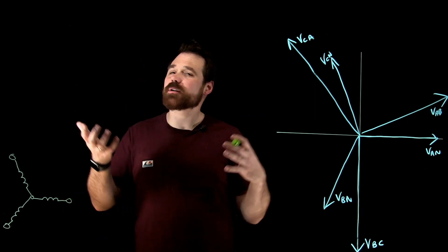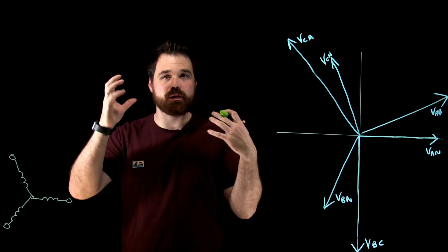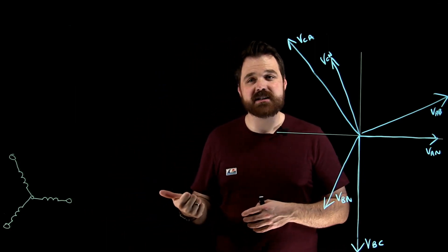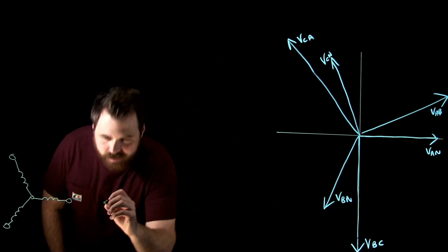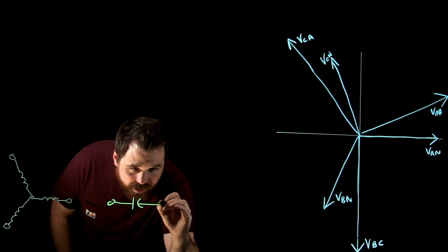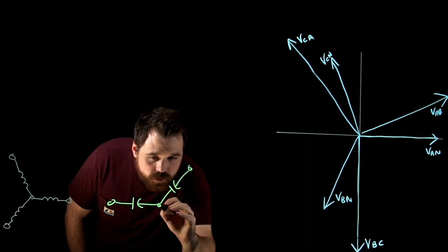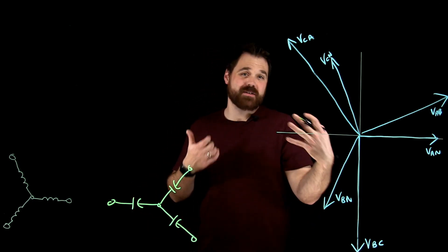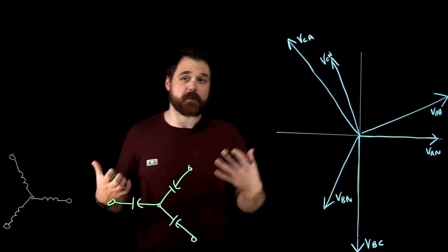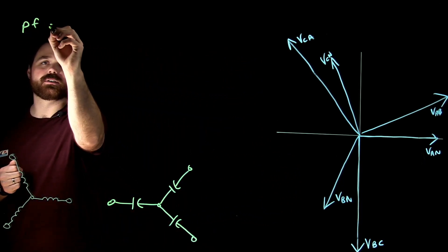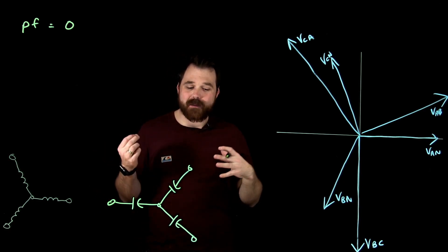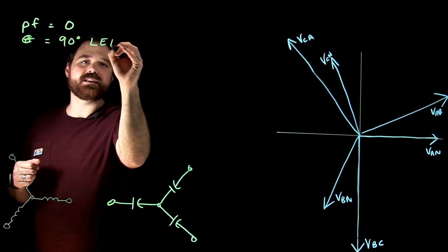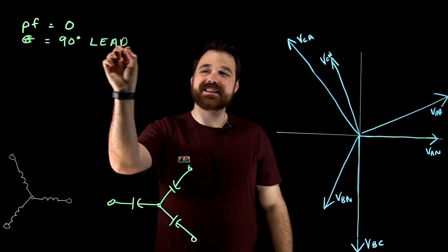Welcome back. I'm talking about a balanced three phase Y load. To have a balanced load, we need the same impedance in each phase and the same power factor in each phase. The load I want to talk about now is a three phase capacitive load. Each one of these capacitors has the same XC value, or the same capacitance, which gives me the same current through each one. And of course, because they're capacitors, they all have the same power factor — which equals zero. The phase angle for a capacitor is a 90 degree lead, meaning the current is leading the voltage in each phase.